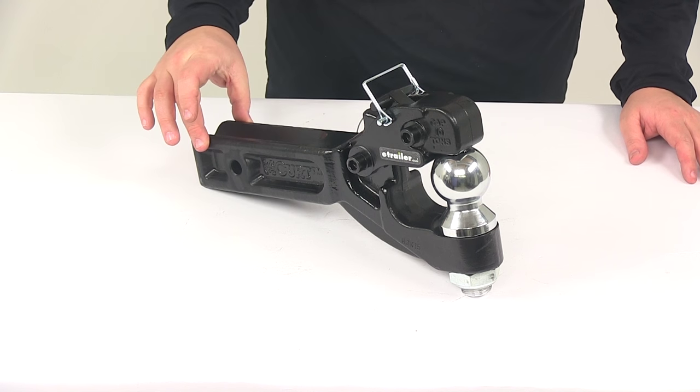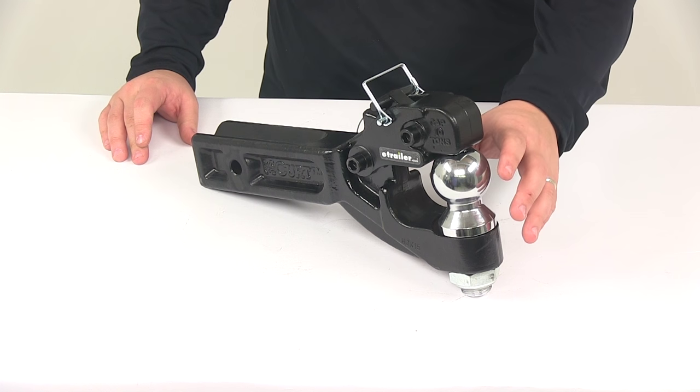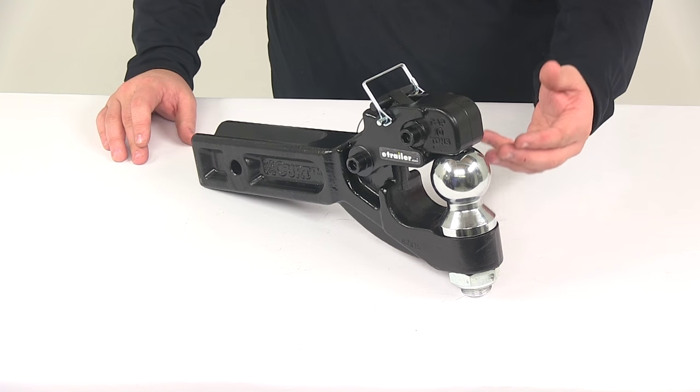The shank slides into the receiver tube of your hitch, and then the pintle hook connects to a lunette ring coupler. You can use the hitch ball to connect to a standard ball coupler.